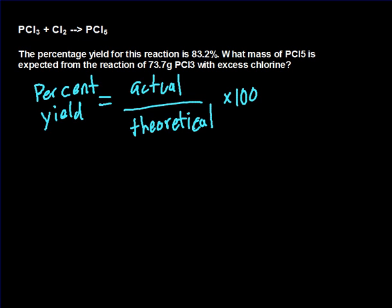Like all these problems, almost always you have to calculate the theoretical. So in this case, what we're going to do is we're going to take 73.7 grams, we're going to calculate the theoretical that you could produce, so we're going to calculate the theoretical amount of PCl5 that you produce, and then we're going to use that to find the answer here.